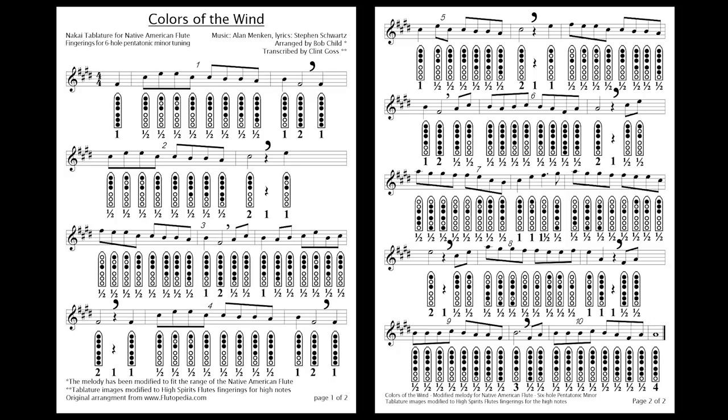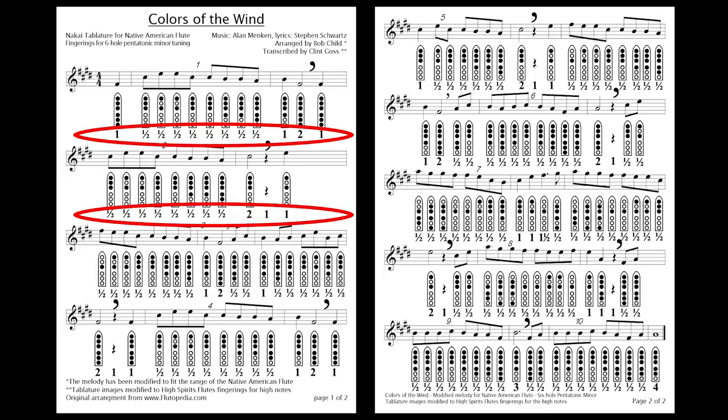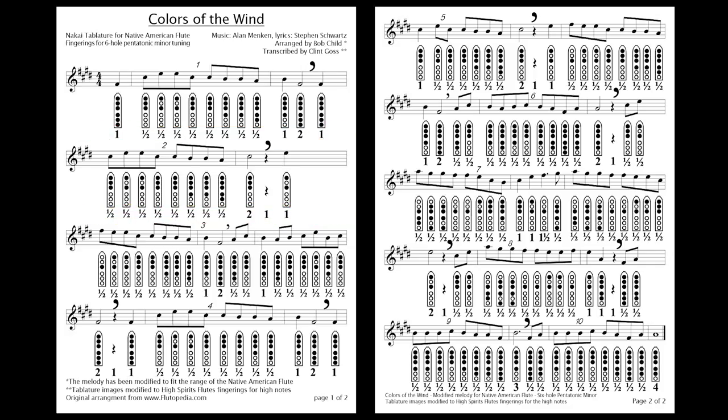This is the sheet music for Colors of the Wind, and this version has the tablature numbers in it. For my eye, they can be kind of overwhelming to have these numbers in here — it makes it very full to look at. So on the webpage for this song, I have two different versions of the tablature for download: one that has the tablature numbers and one without it.